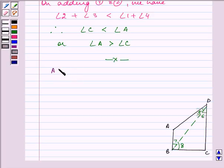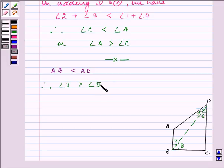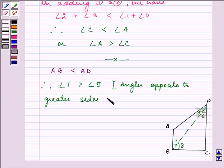Now, AB is smaller than AD. Therefore, we can say that angle 7 is greater than angle 5, because of the same reason that angles opposite to greater sides are greater.